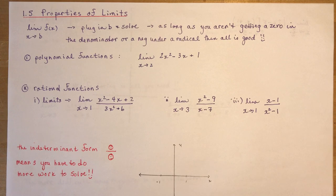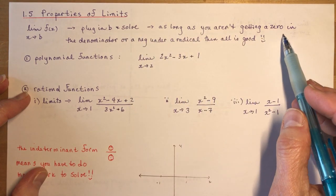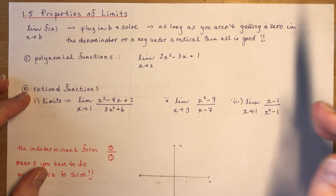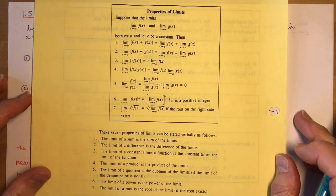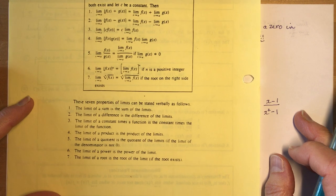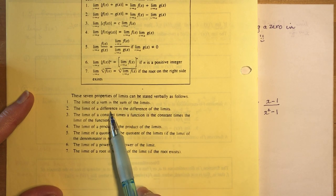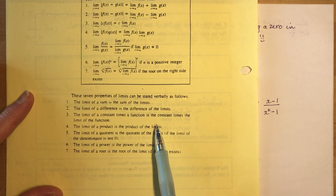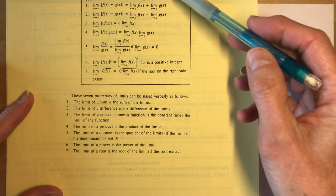The limit as x approaches b of a function — you simply plug in b and solve, as long as you aren't getting a zero in the denominator or a negative under a radical. The seven properties of limits can be stated verbally: the limit of a sum is the sum of the limits; the limit of a difference is the difference of the limits; the limit of a constant times a function is the constant times the limit; the limit of a product is the product of the limits; the limit of a quotient is the quotient of the limits provided the denominator is not zero; the limit of a power is the power of the limit; and the limit of a root is the root of the limit if the root exists.